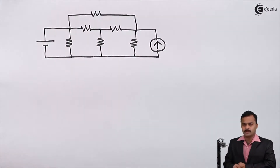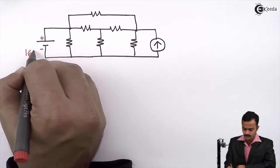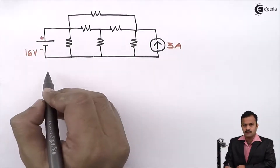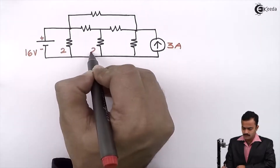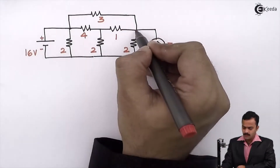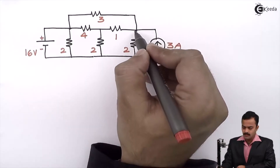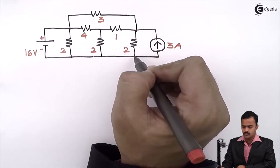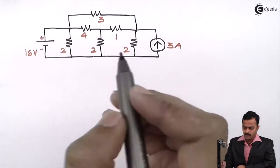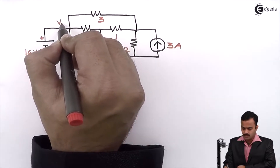The problem has a voltage source of 16 volts and a current source of 3 amperes; resistances are given. The objective is to get the potential of this node, or the voltage drop across the 2 ohm resistance, if I consider this as a reference. I will mark this node as X and the voltage of this node is Vx.